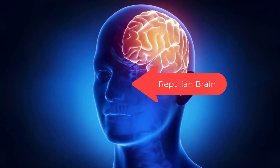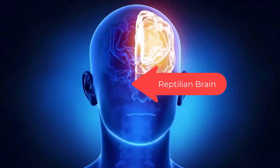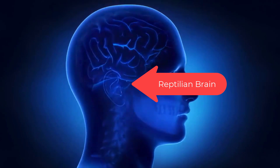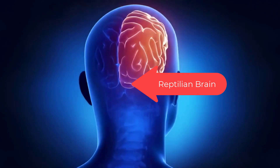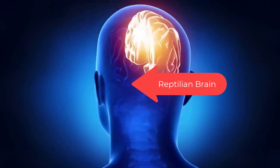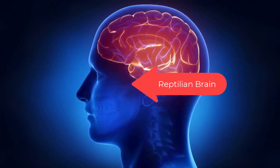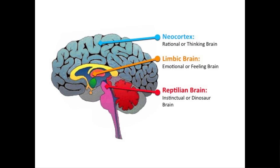The old brain — the reptilian brain — decides. It can take into account input from the other brains, but it can also make a decision faster than the blink of an eye, then use the other brains to justify that decision. The reptilian brain is visual and hardwired into the brain stem.